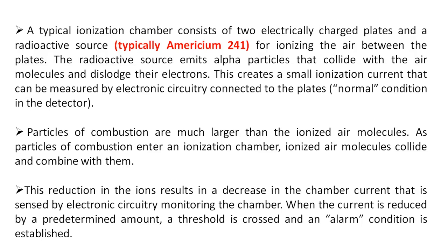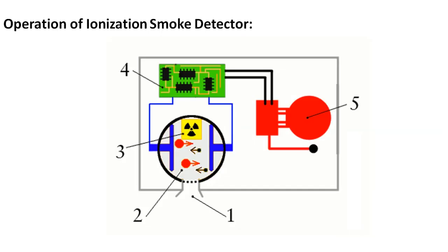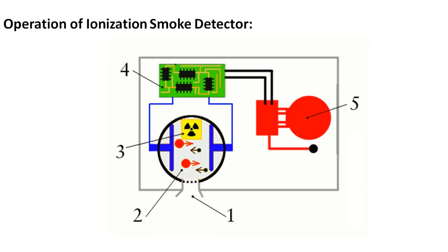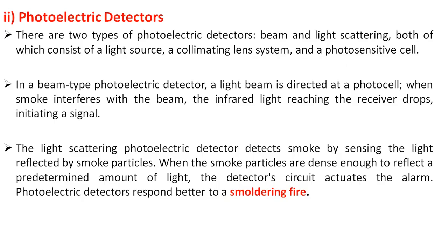Photoelectric detectors come in two types: beam type and light scattering type. Both consist of a light source, a lens, and a photosensitive cell. In the photo beam type photoelectric detector, a light beam is directed at a photocell. The source and sensor are on opposite sides. Under normal conditions, the sensor detects maximum light. Whenever smoke particles enter the detector area, the sensor sees less light, which is detected by the electronic circuit and triggers an alarm.